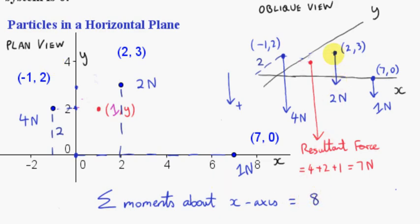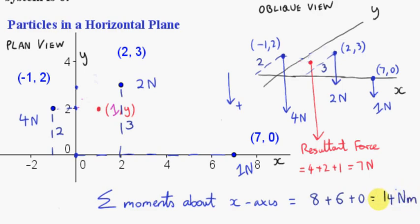Now, what about the moment of the 2N force about the x-axis? Drawing a line parallel to the y-axis, this distance is 3, so the y value is plus 3. We multiply the force, which is 2, by 3 to get 6 — so it has a positive moment. If the point were below the x-axis, we would have a negative moment since the y value would be negative. Finally, we have the 1N force, which is on the x-axis. So its moment about the x-axis is zero — the perpendicular distance is zero, giving us 1 times 0, which is 0. So we end up with a total of plus 14 Newton meters.